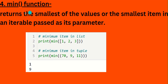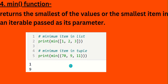Next, the 'min' function, which returns the smallest value in a list, dictionary, or tuple. For example, min(1, 2, 3) returns 1. For min(70, 9, 11), the minimum is 9. The 'max' function returns the maximum, so max(70, 9, 11) returns 70.